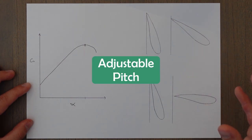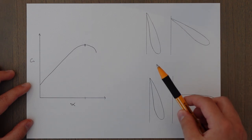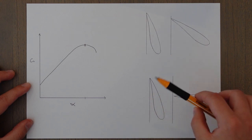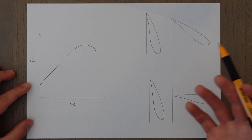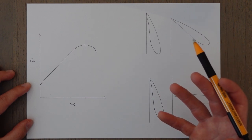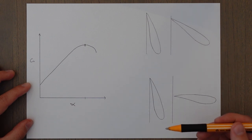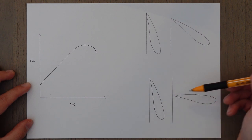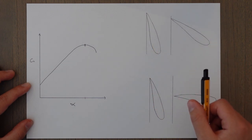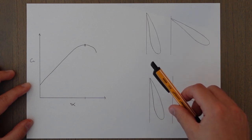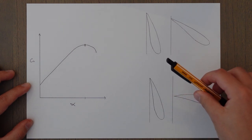Another type is called the adjustable pitch propeller — a very creative name — because the pitch can be adjusted. It can go from fully fine, which would be zero, to fully coarse, which would be 90, and this allows for a large range of speeds and RPMs so the efficient angle of attack can always be achieved. For example, during takeoff with a slow forward speed the pitch would be set quite fine to generate lots of forward thrust; then as we speed up, our angle of attack goes down, so we would coarsen off as we get faster and faster.